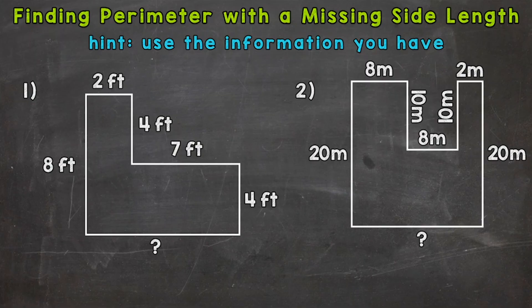So if we're starting with a missing side length, the first thing we need to do is figure out what the measure of that side length is going to be. So we have two examples that we're going to go through together. So let's jump right into number one, where our missing side length is this bottom side here.